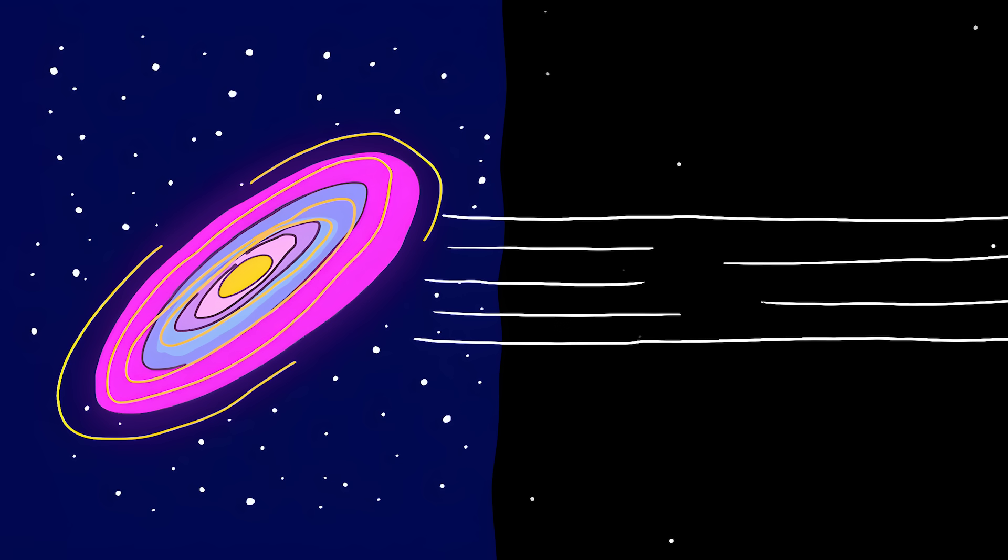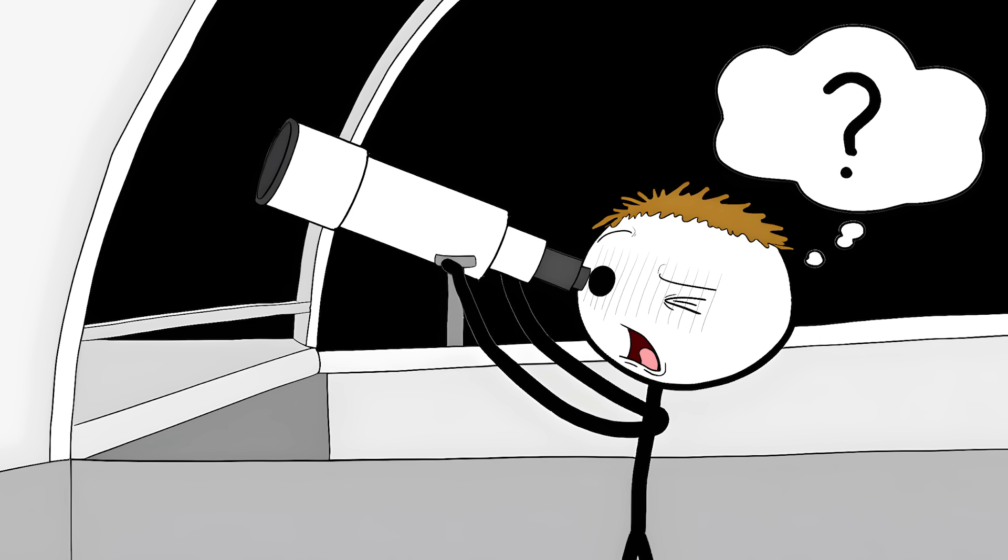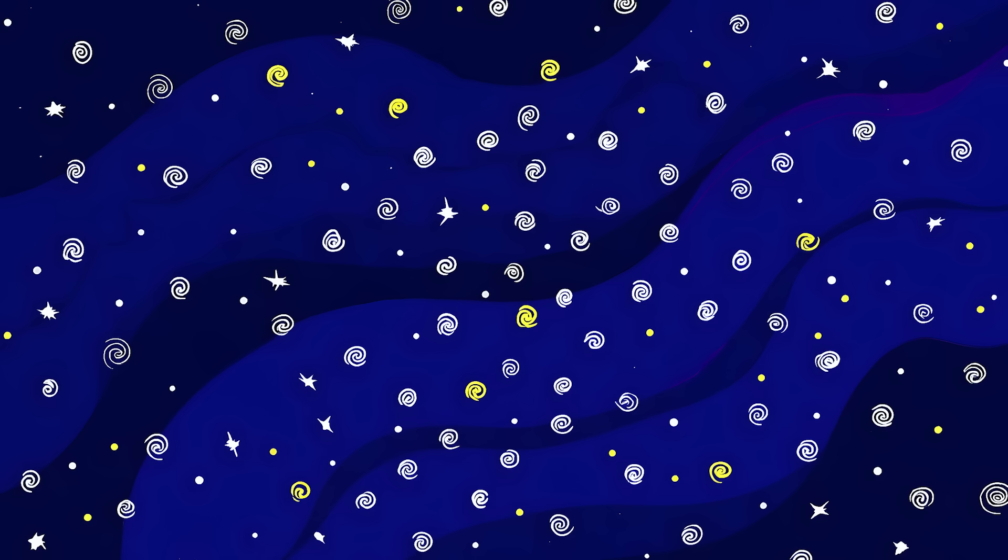Number two, the great nothingness. Picture this: you're floating in space, and for 330 million light years in every direction, there's practically nothing. No galaxies, no stars, just emptiness. This void should have about 2,000 galaxies in it, but when scientists look inside, they only find about 60.